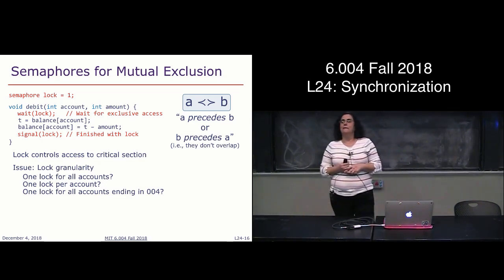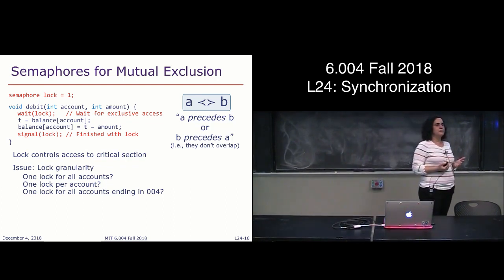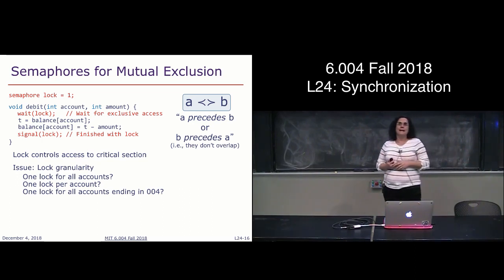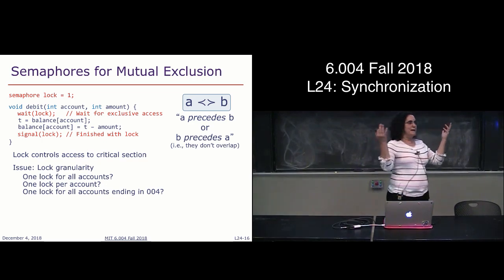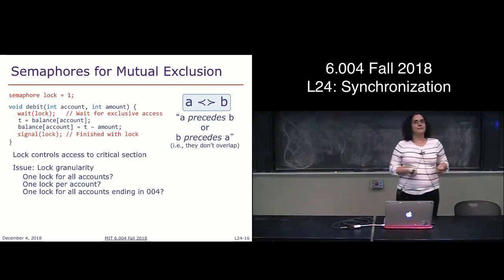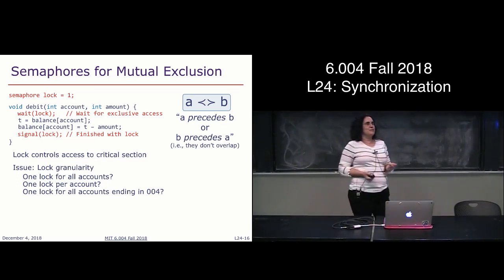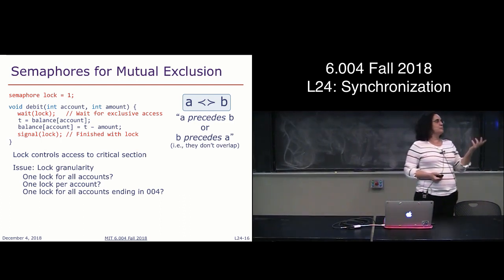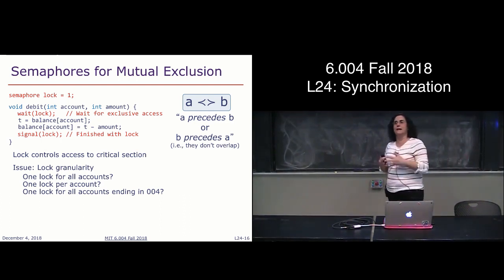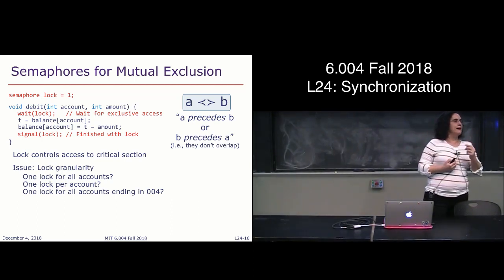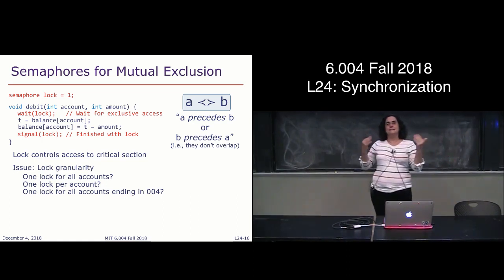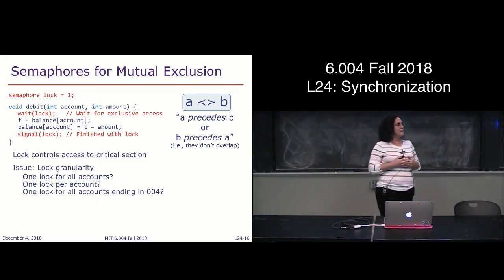One other comment: when using locks, think about the granularity. If you have a lock for every single account, that introduces tremendous overhead on the banking system. On the other hand, a single lock for the entire banking system means only one account can be accessed at a time, which is too prohibitive. A middle ground would be something like all accounts ending in 004 sharing a single lock, so you can't have two such accounts access their locks simultaneously, but account 004 and account 003 could still access their accounts at the same time.